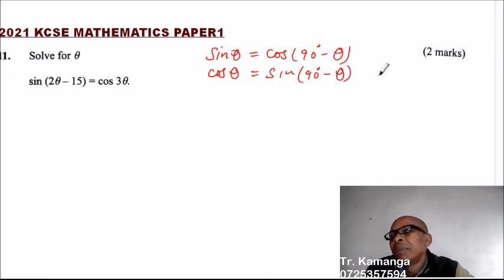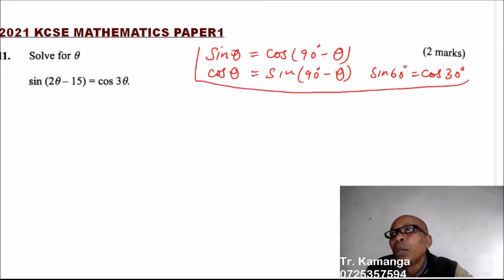What does that mean? In simple terms, it means sin 60 is the same as the cosine of 90 minus 60, which is 30. And you can confirm that with your calculators. So this is the information that would help you to be able to solve this question.